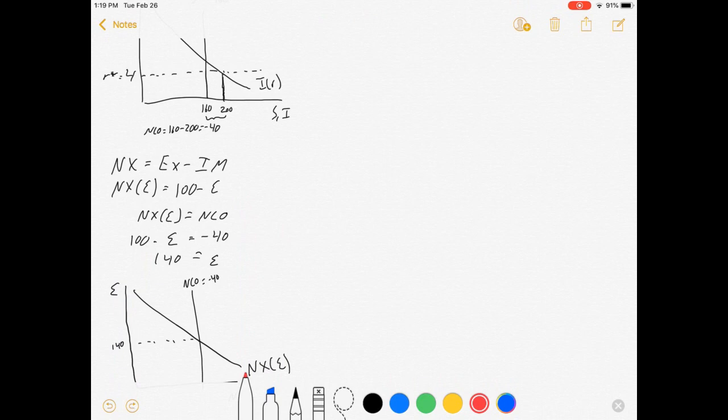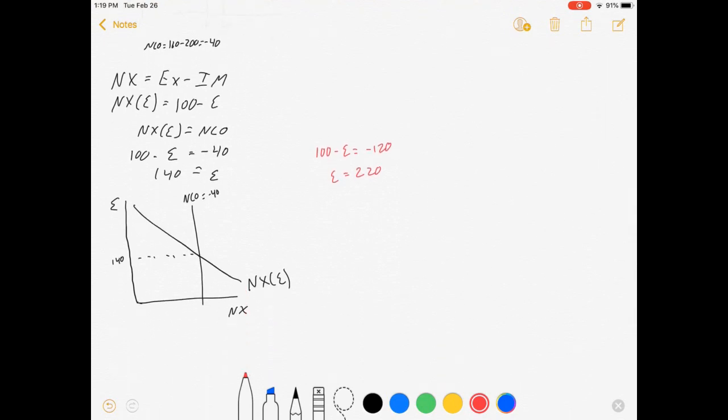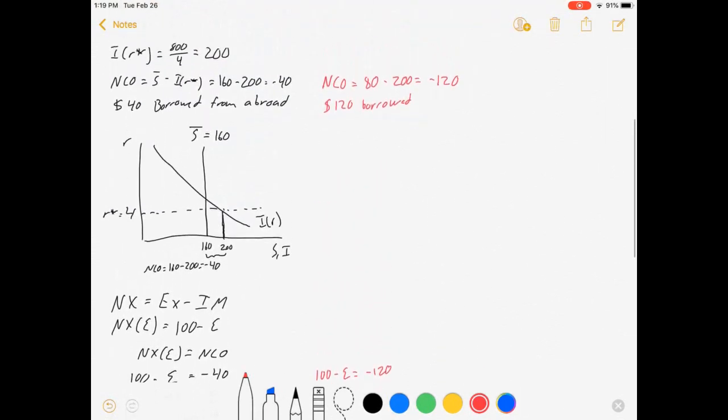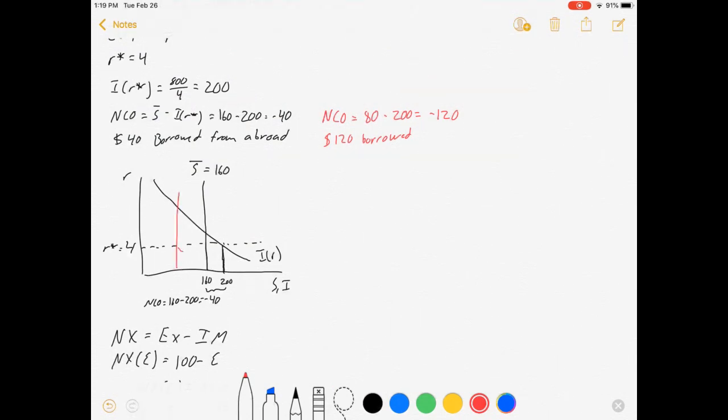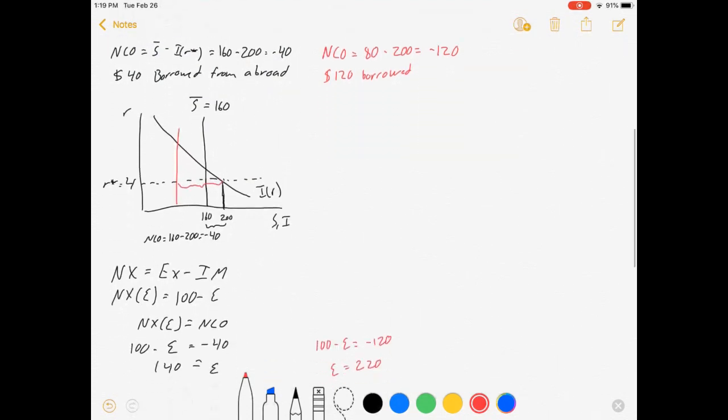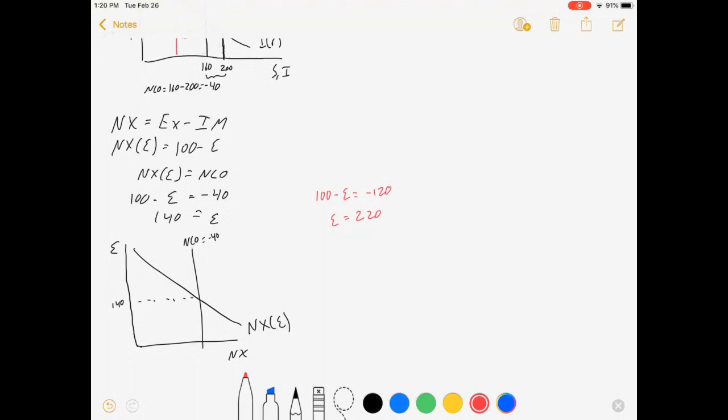From there, we can go even more. Net exports equals net capital outflows. That's 100 minus epsilon equals minus 120, so epsilon equals 220. This shift up here, where we got this wider gap, is a leftward shift of this. Net capital flow has decreased to negative 120.